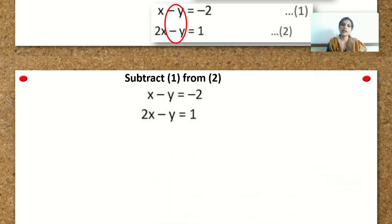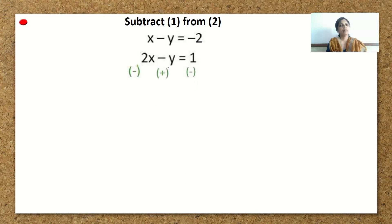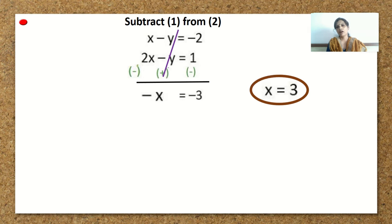Keeping that in mind, we will subtract equation 1 from equation 2. We write equation 2 first, and below that equation 1. When subtracting, we have to change the signs of the coefficients of the second equation: plus 2x becomes minus 2x, minus y becomes plus y, and plus 1 becomes minus 1. The y terms cancel. From the x coefficients, 1 minus 2 gives minus 1, so we get minus x is equal to minus 3. Cancelling the minus sign from both sides, x is equal to 3.